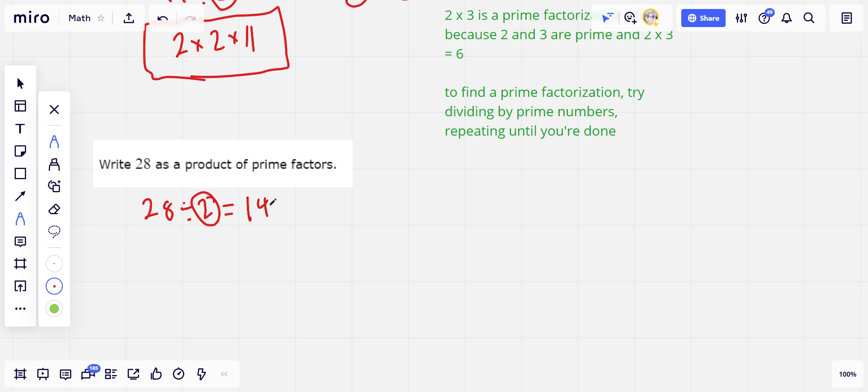So we factored out a 2. That's still even, so I'm going to divide it by 2 again. And 14 divided by 2 is 7. And 7 is prime.